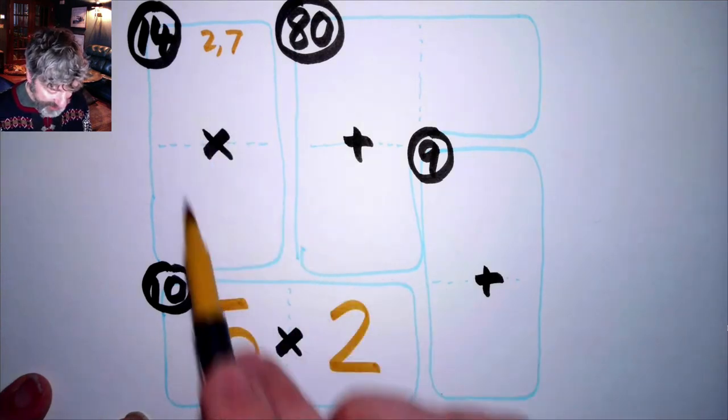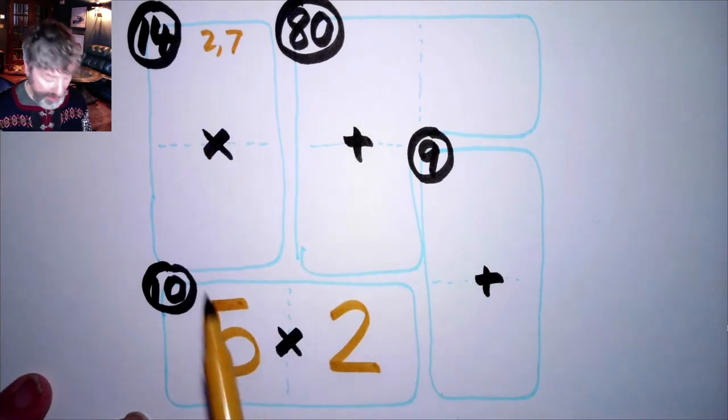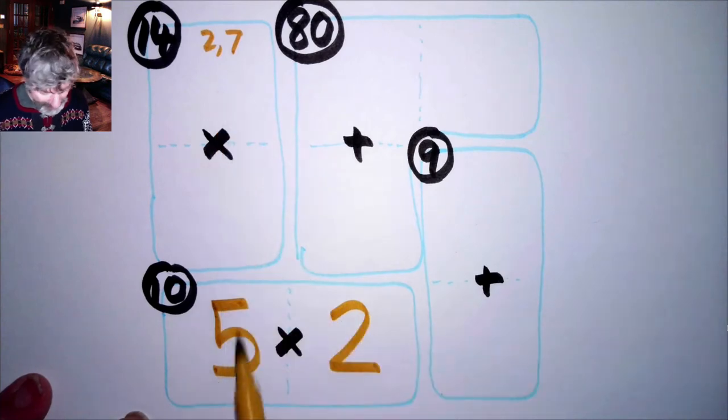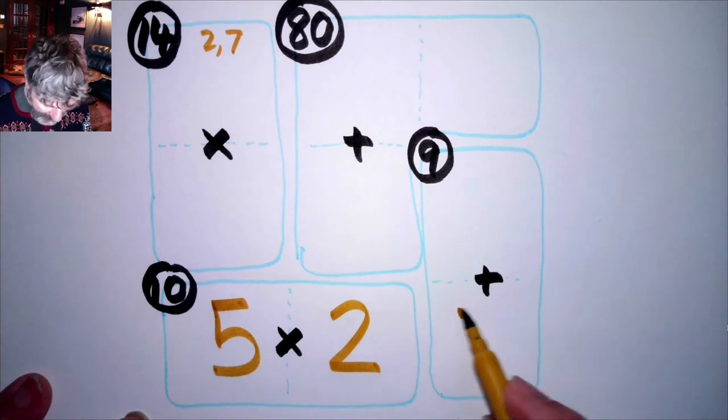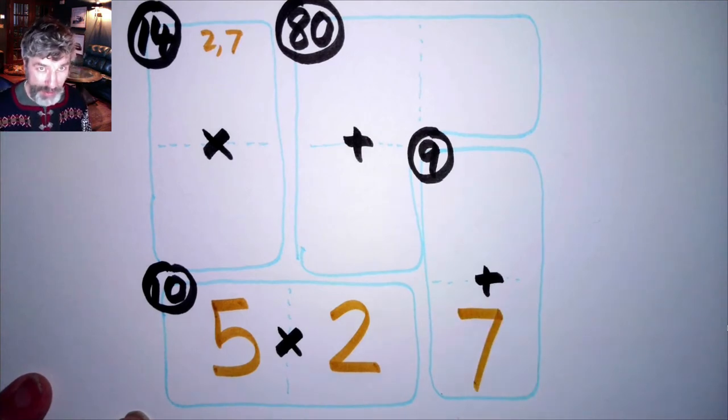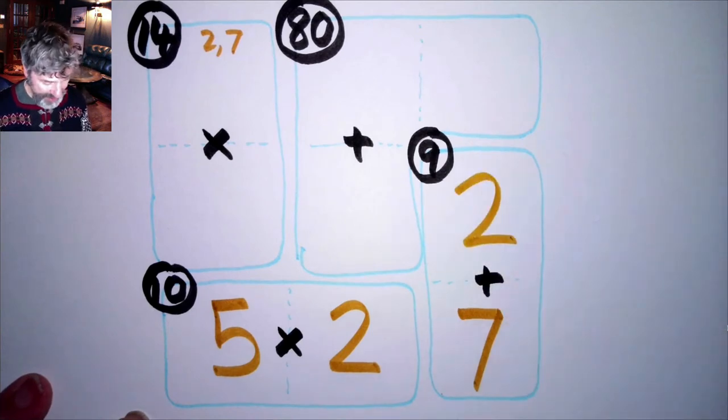And I still don't know this. But there's a 7 over here. And remember, in each column, there has to be the same digits as each row. So if there's a 7 in this column, there has to be a 7 in this row. So this has to be a 7. 7 plus what is equal to 9? It's 2.